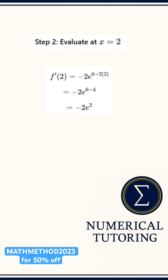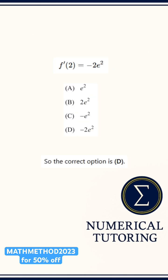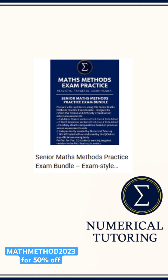So, the final answer is negative 2e squared. That matches option D.